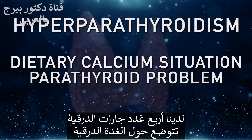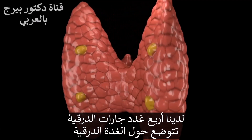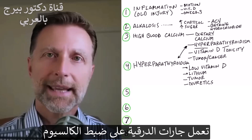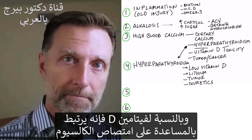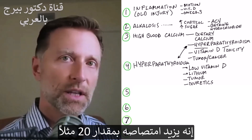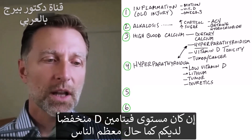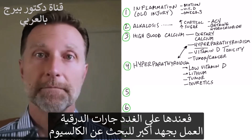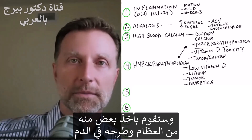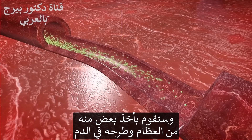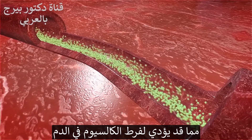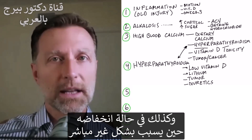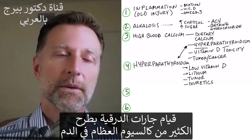Let's touch on hyperparathyroidism. You have four parathyroid glands located around your thyroid gland at the base of your neck. The parathyroid regulates calcium. When your vitamin D is low — vitamin D has everything to do with helping you absorb calcium; it'll increase the absorption of calcium by 20 times — your parathyroid gland is going to have to work harder to look around for calcium. It will go into your bone, borrow calcium from the bone, and bring it into the blood. That can create a hypercalcemic — high calcium in the blood — situation. We have vitamin D at both spectrums, but indirectly causing the parathyroid to dump and release a lot of calcium from the bone into the blood.